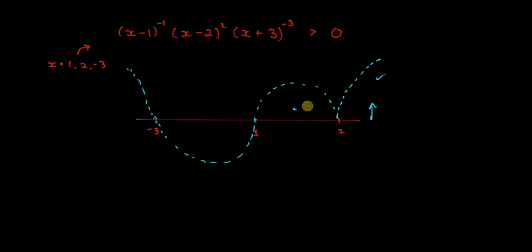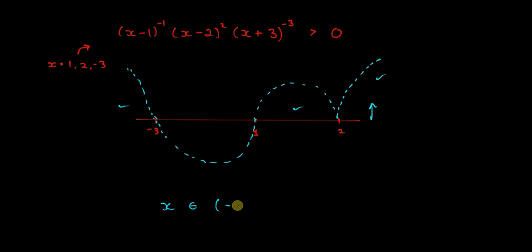We want the expression greater than 0 — above the axis. That occurs in the regions above the axis. Since this is a strict inequality (greater than, no equals), x belongs to (minus infinity, minus 3) union (1, infinity).